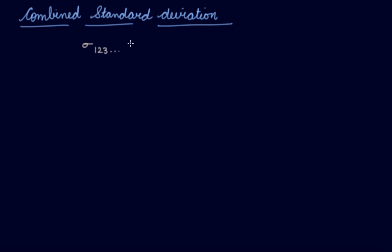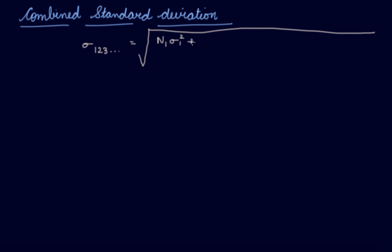The combined standard deviation formula has: n1, the number of observations in the first series, multiplied by the standard deviation of the first series squared; plus n2, the total observations of the second series, multiplied by the standard deviation of the second series squared; plus n3, the number of observations in the third series, multiplied by the standard deviation of the third series squared.